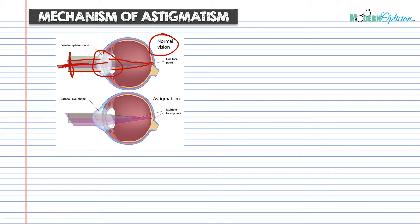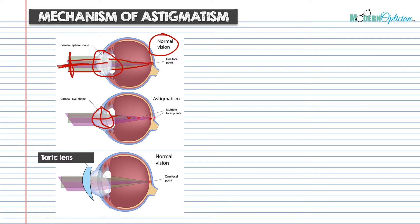In astigmatism, however, this misshapen cornea — with two different curvatures of power, one in the vertical meridian and one in the horizontal — causes the refraction in the horizontal plane to differ from the vertical plane. The green area shows refraction through the horizontal plane and the red through the vertical, giving two completely different point foci from the same refractive surface. This is where the visual symptoms stem from. As opticians, we know the solution is to correct it with a toric lens that matches those different radii of curvature.